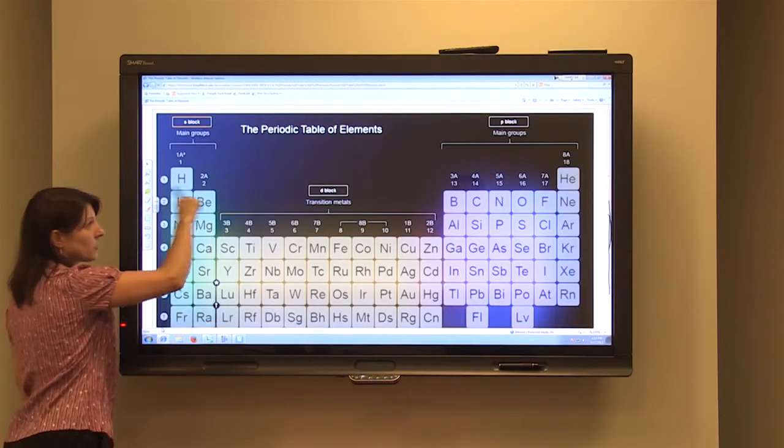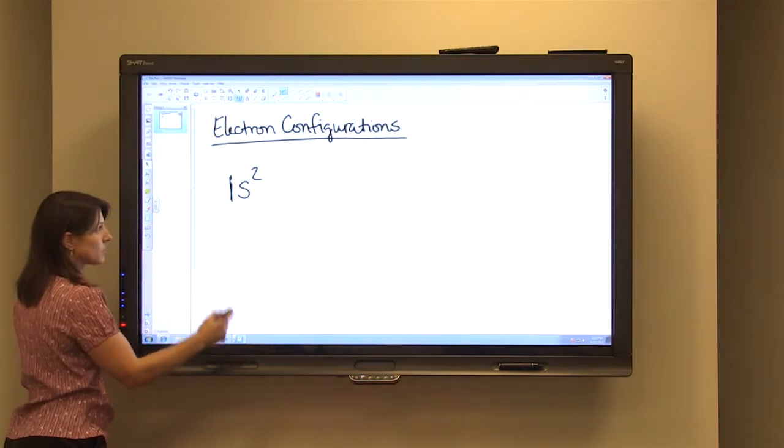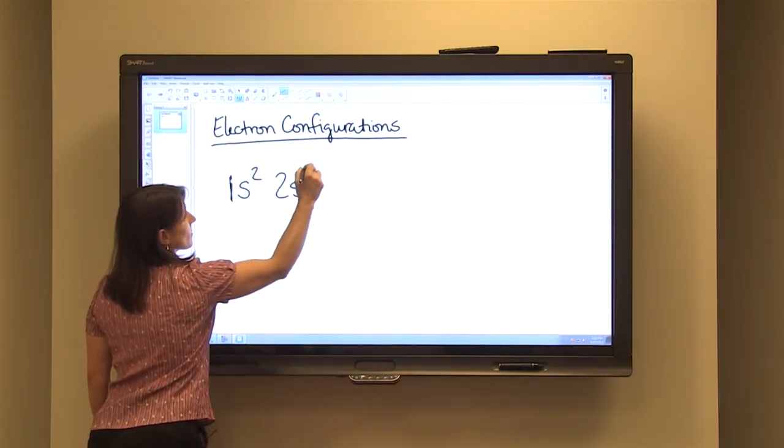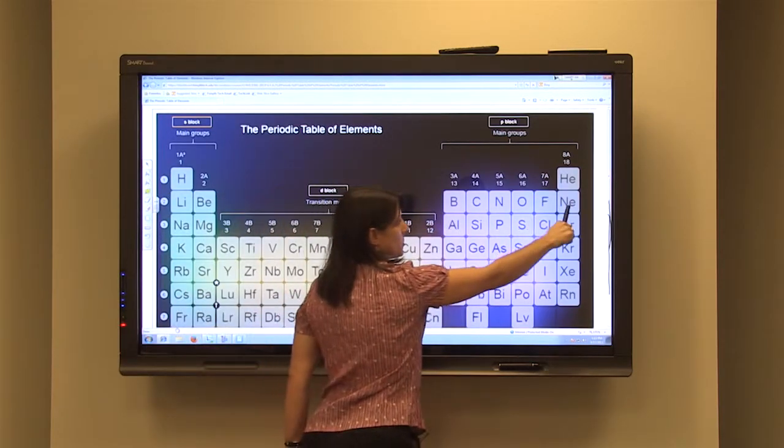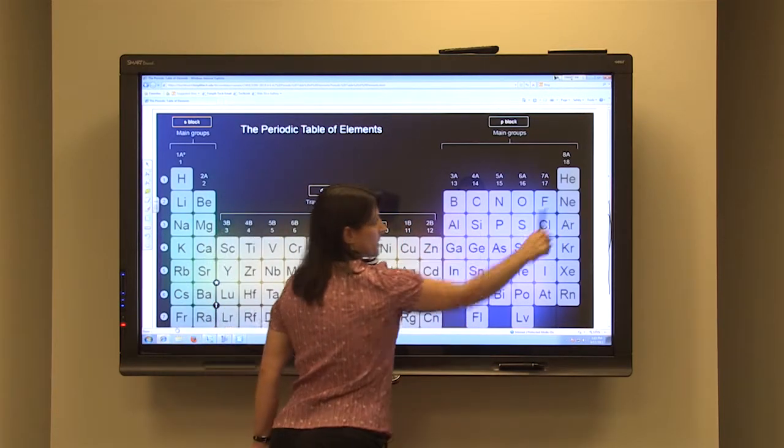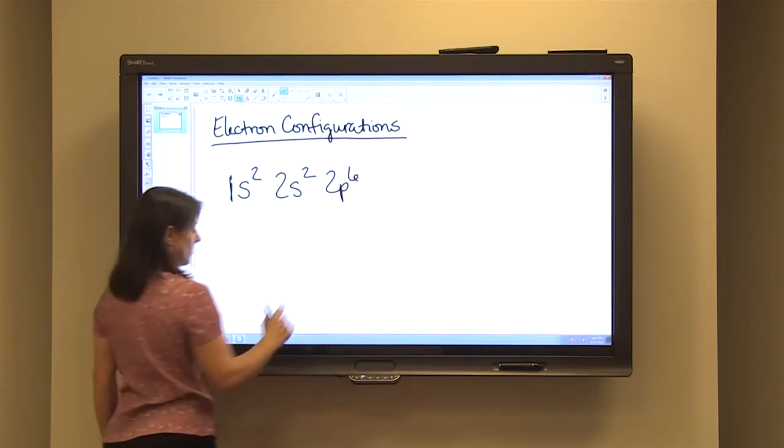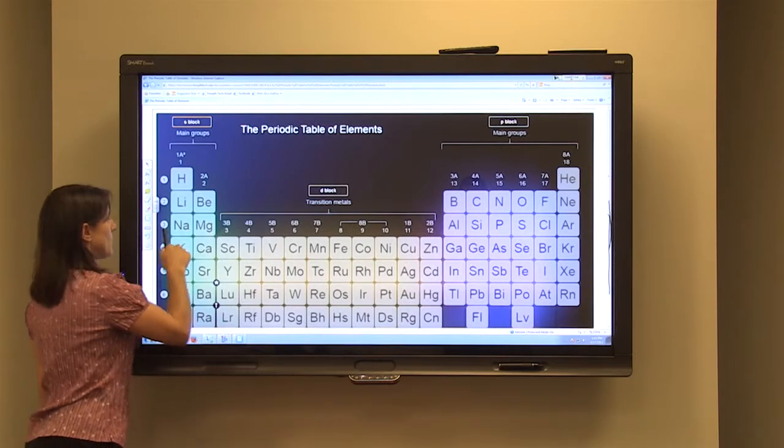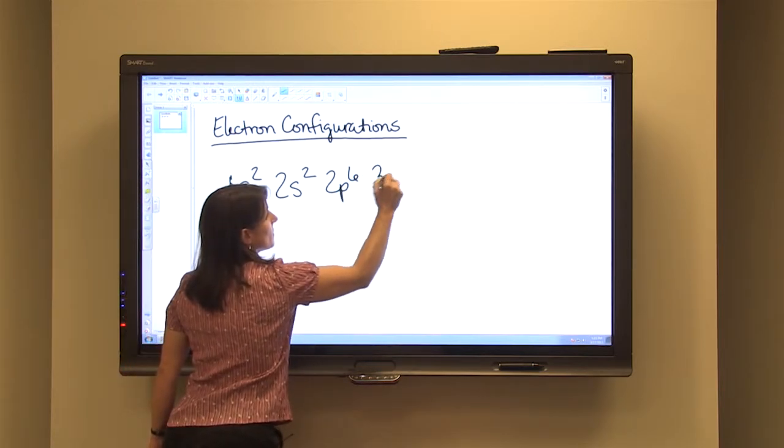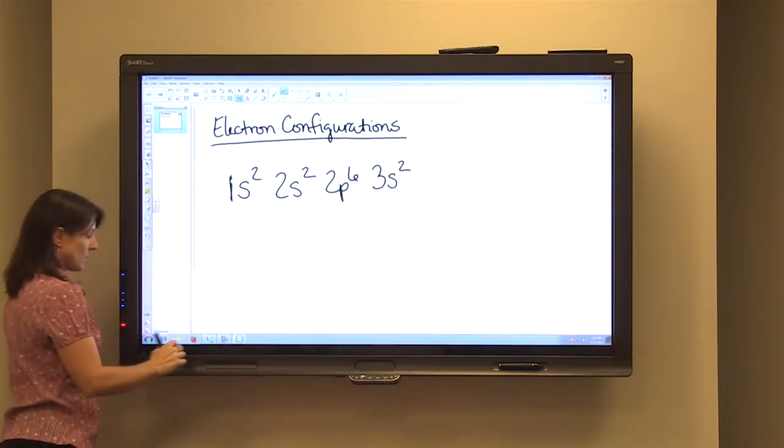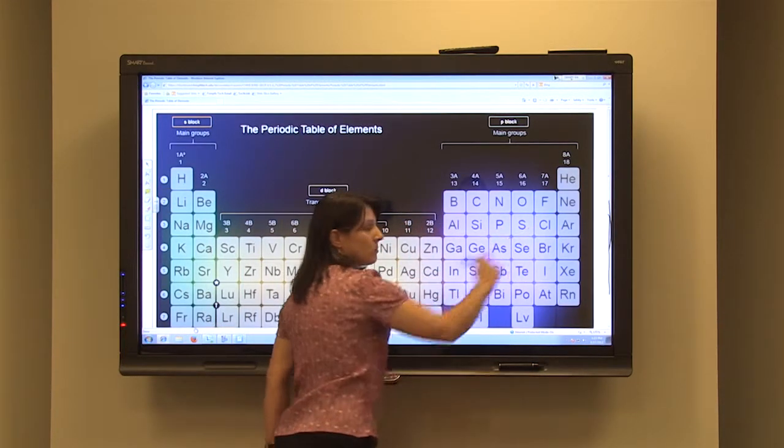After the first level is full, we come to the second level and it's going to be 2s, and S can hold two electrons. After 2s, we follow the periodic table across to 2p. 2p can hold a total of six electrons. After 2p, we come to 3s. S can hold a maximum of two. And after 3s, if we follow the periodic table across, we come to sub-level 3p.